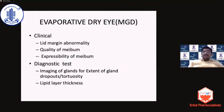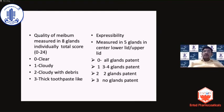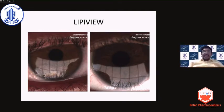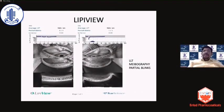For evaporative dry eye or MGD, there are both clinical and diagnostic tests. The clinical tests are based on lid margin abnormality and the quality and expressibility of meibum. Meibum quality is scored 0 to 24, where 0 is clear and 3 is toothpaste-like, assessed across 8 glands for both eyes. Expressibility is measured across 5 glands, where 0 means all glands are patent and 3 means no glands are patent, then added for both eyes. LipiView is an interferometry-based tool that identifies lipid layer thickness quantitatively, and also provides meibography and blink pattern data — how many blinks were partial versus complete.